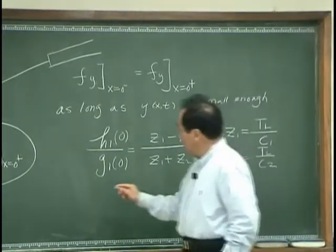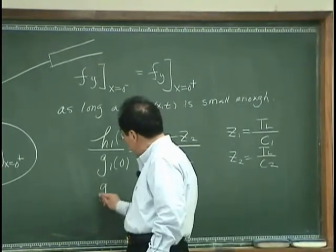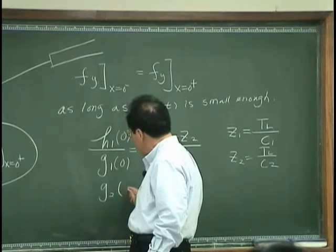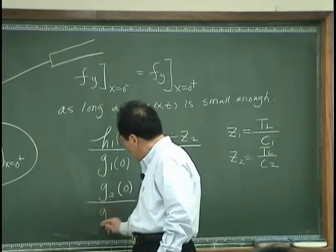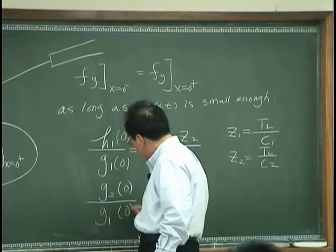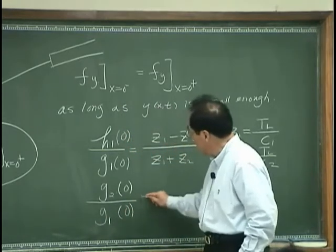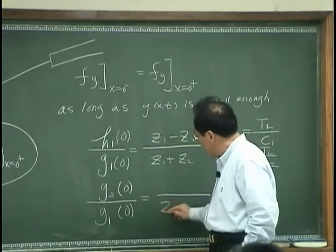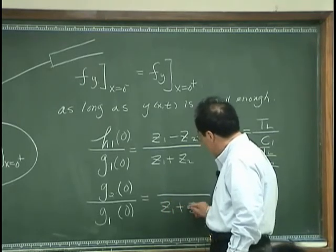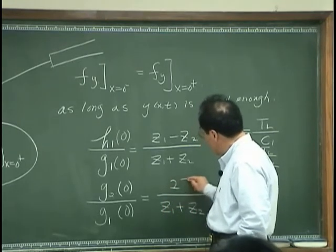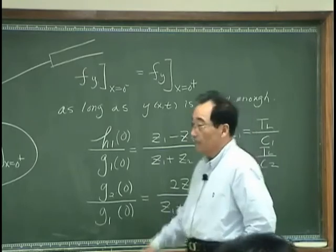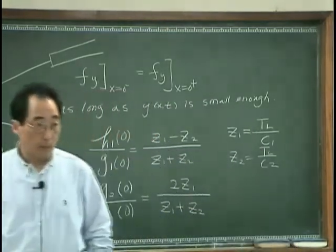And the ratio between the transmitted wave in medium 2 that is G2 compared with the instant wave in medium 1 that is G1 is equal to Z1 plus Z2 over 2 Z1.